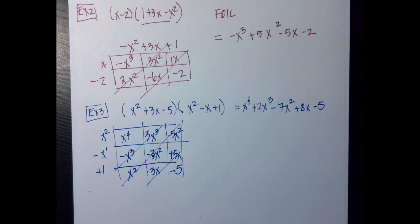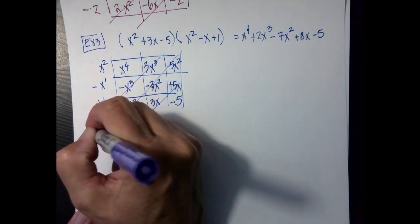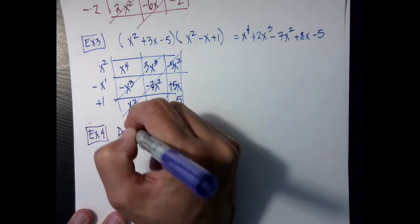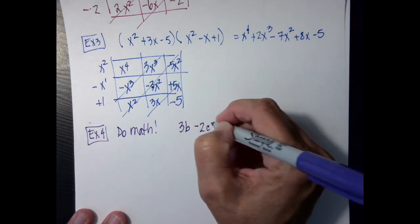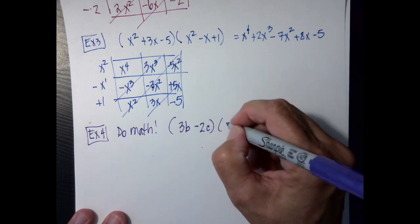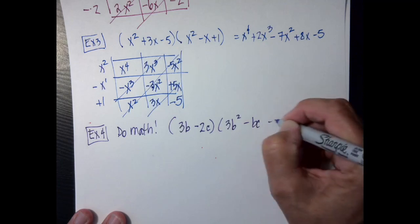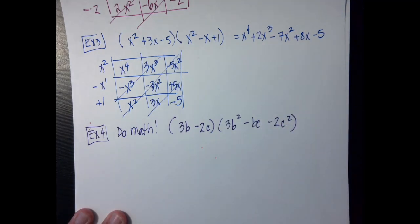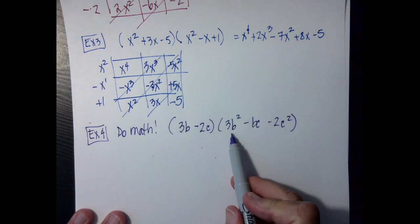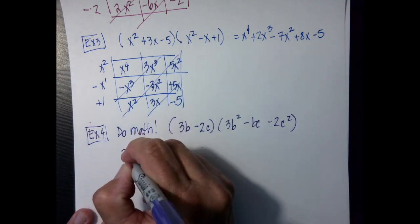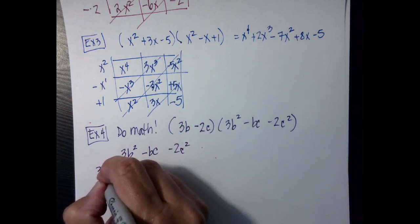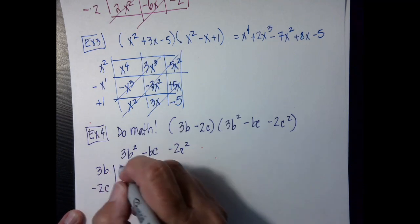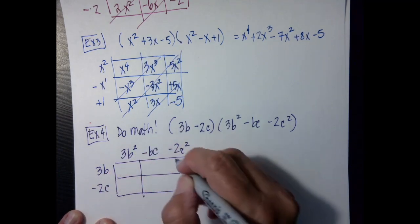I have one more example for today and then we're done — a nice short video. For our last example, example 4, our directions say do math. We're going to have 3b minus 2c — that's not a 6, by the way — and I have 3b squared minus bc minus 2c squared. Again I'm going to do the box. I tend to always put the 3-term at the top, so minus bc and then minus 2c squared. You don't have to — you could arrange it the other way — it doesn't matter as long as you're consistent.